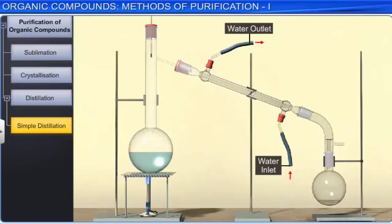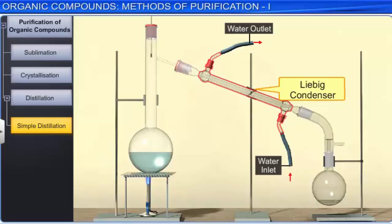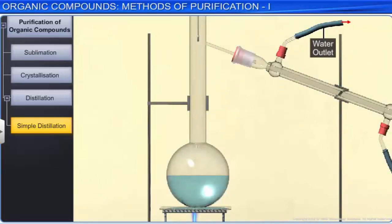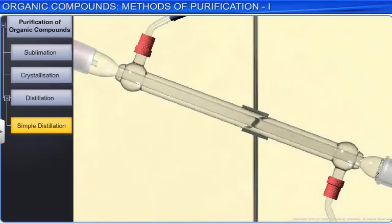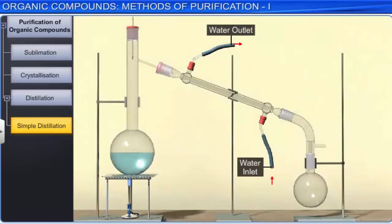In this method, the liquid mixture is taken in a round-bottom flask fitted to a Liebig condenser and heated. On heating, the vapors of the liquid with the lower boiling point are formed first and at a constant temperature the whole liquid changes into vapors. The vapors are condensed and the liquid is collected in a receiver. The vapors of the liquid with higher boiling point are condensed and collected separately. Simple distillation cannot be used for liquids which do not differ much in their boiling points.